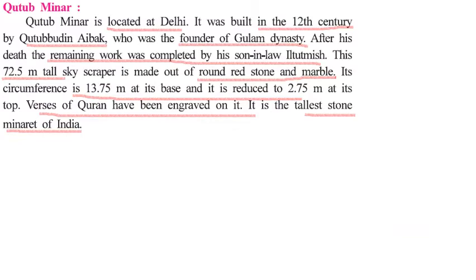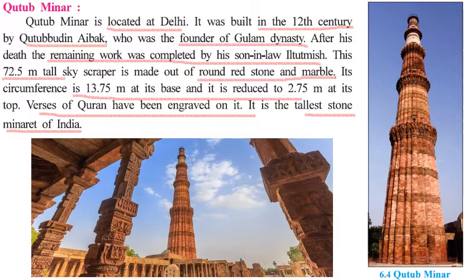Moving forward to the medieval era — Qutub Minar is located in Delhi. It was built during the 12th century by Qutubuddin Aibak, the founder of the Slave dynasty. During its construction he died, and the work was completed by his son-in-law Iltutmish. This is a 72.5-meter-tall minaret, considered the tallest stone minaret of India. Its circumference is 13.75 meters at the base but narrows to only 2.75 meters at the top. The verses of the Quran have been engraved on its walls.